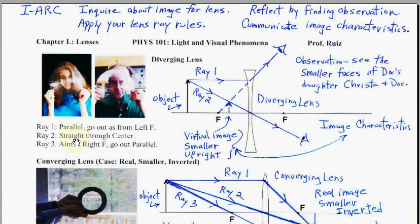Ray 2 is straight through the center — you go straight through the center, and there is no bending. Since we have a thin lens, we neglect any shift that would occur with refraction. Here is a ray right through the center, and where these two rays cross is the image. We always draw our rays from the top of the object, and when they cross or appear to cross using dotted lines, that gives us the top of our image.